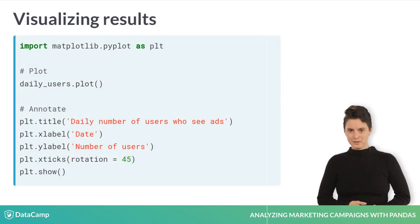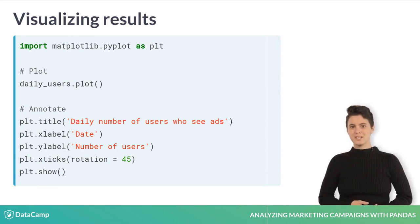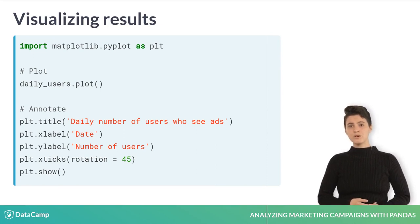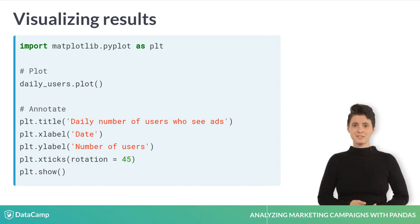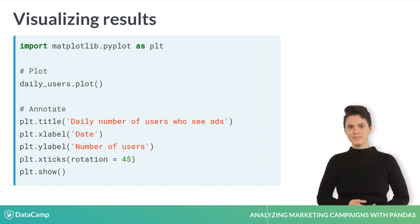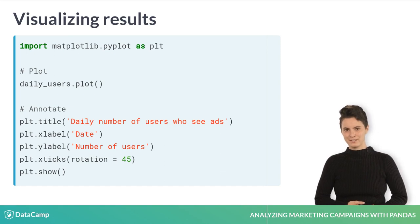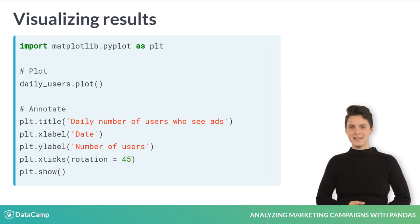As you saw on the previous slide, it's not easy to interpret results when they're printed in a table. It's much easier to notice fluctuations in our metrics when we plot them. We first import matplotlib.pyplot as plt, then we plot the series daily users. It's good practice to always add a title and labels to your plot to clearly convey what information the chart contains. You can add a title using plt.title and add x and y labels using plt.xlabel and plt.ylabel functions respectively.